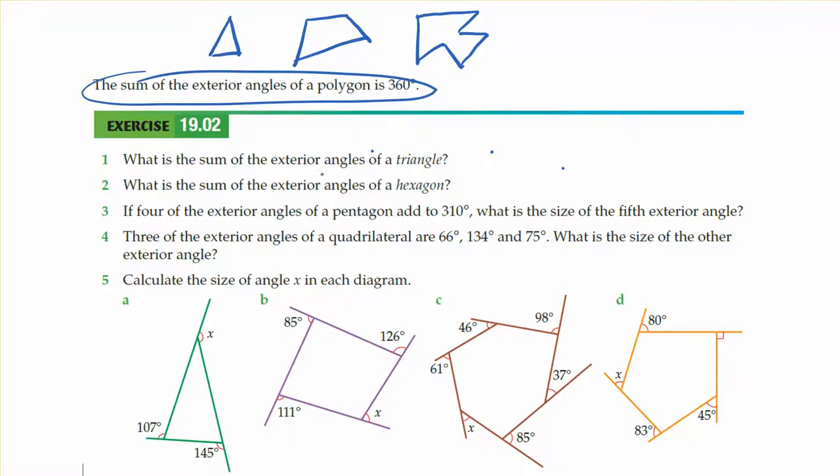So the sum of the exterior angles of a triangle, that would just be 360. Because any polygon, whether it's a triangle or a quadrilateral or a crazy-sided shape, we have to just go 360 degrees to get all the way around the shape. So it doesn't matter if it's a hexagon or an octagon or a 15-sided shape. It's going to be 360 degrees all the way around.